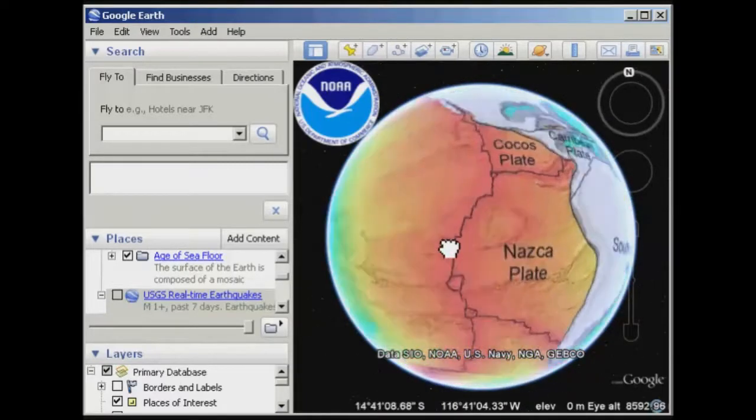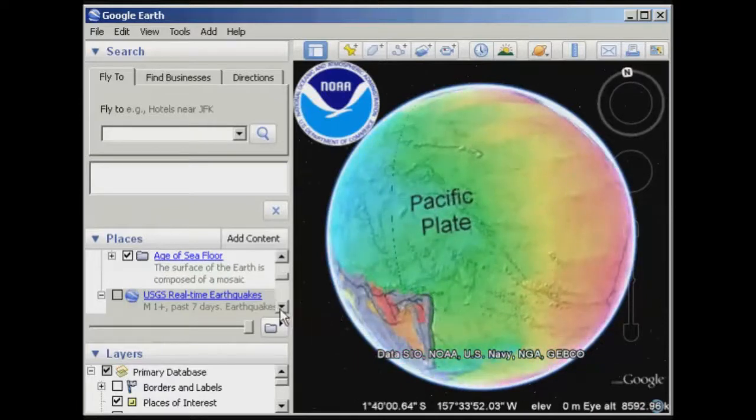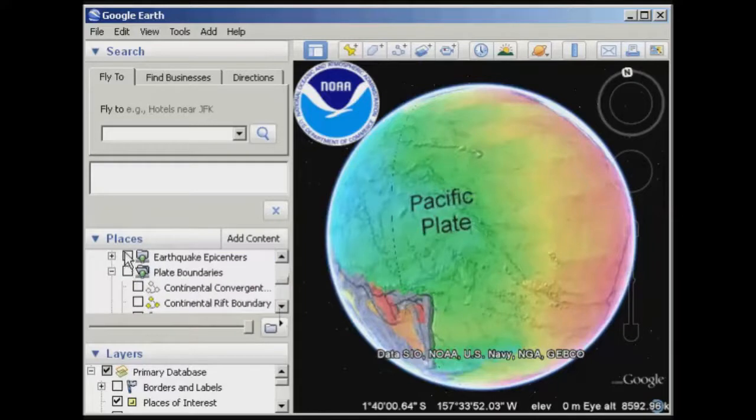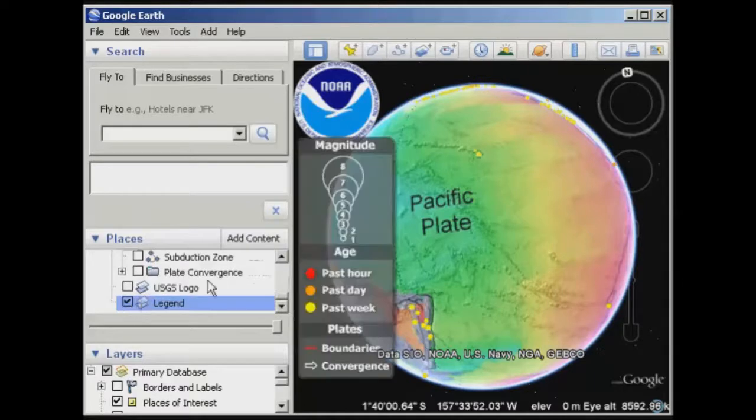But one interesting thing that you can do, having a look at where all these plate boundaries are, is also to tick on the layer which I've previously loaded that shows you the earthquake epicenters. And this one's actually got a legend, so I might tick that on this time too.